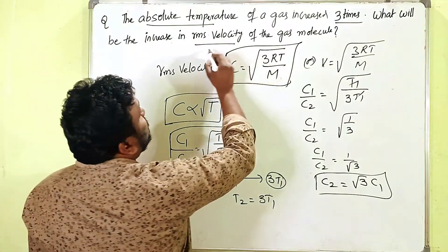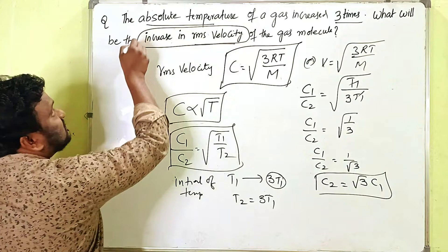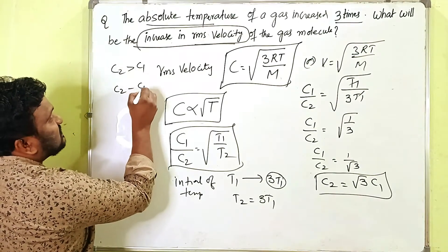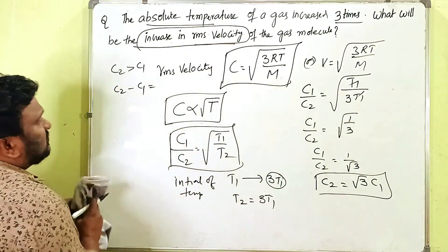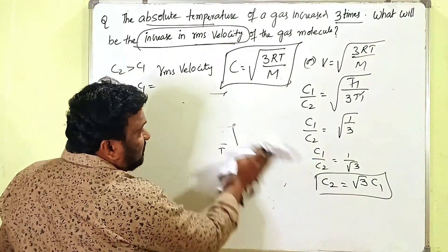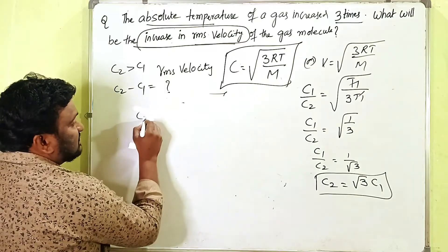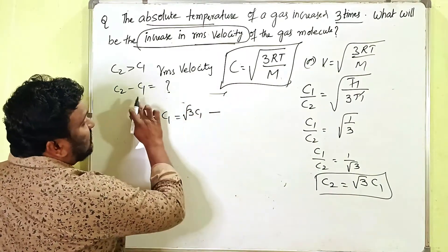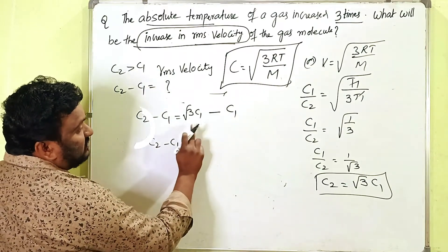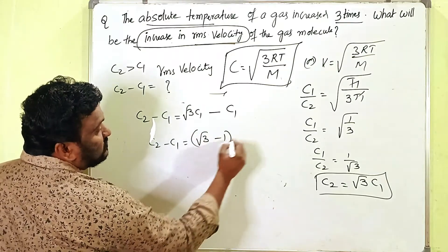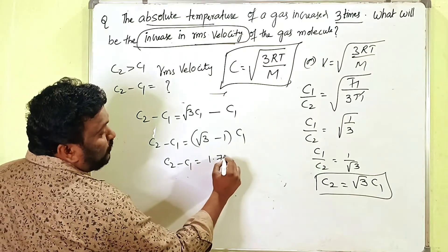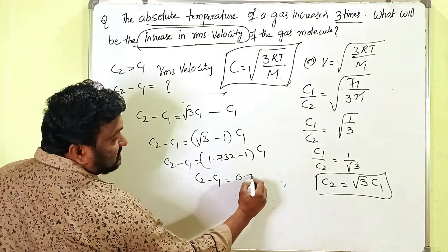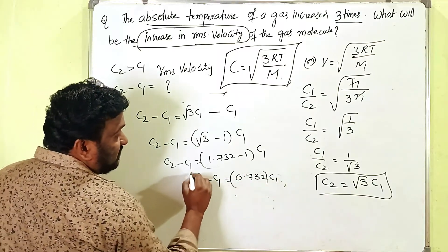Now we need to find the increase in RMS velocity, which is c2 − c1. Substituting c2 = √3 · c1, we get: c2 − c1 = √3 · c1 − c1 = (√3 − 1) · c1 = (1.732 − 1) · c1 = 0.732 · c1. So the increase in RMS velocity is 0.732·c1 when the absolute temperature is increased three times.